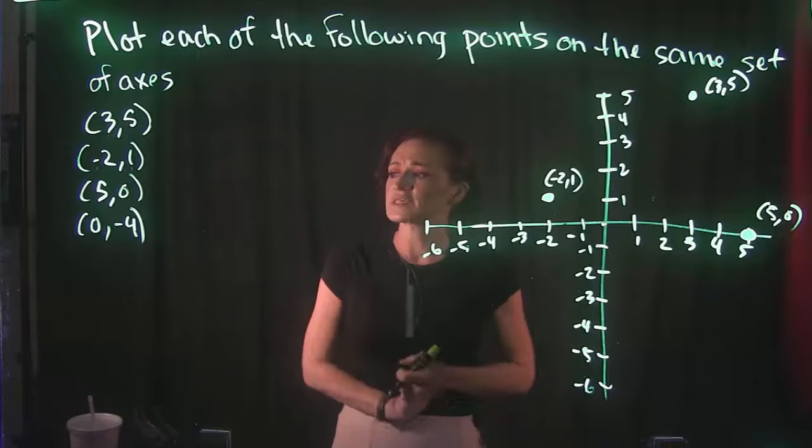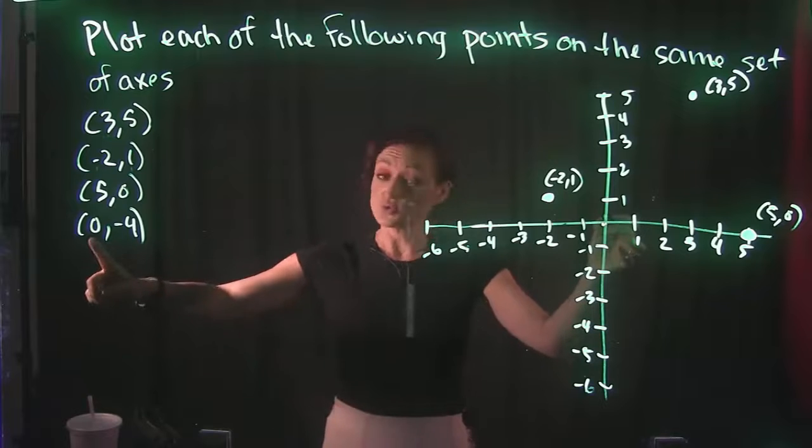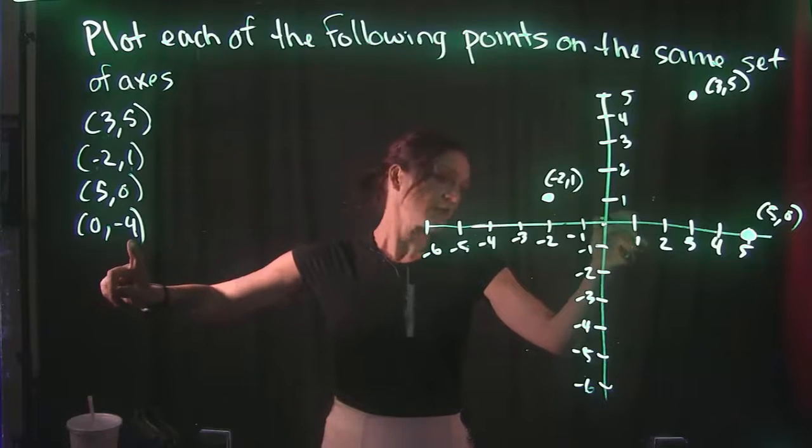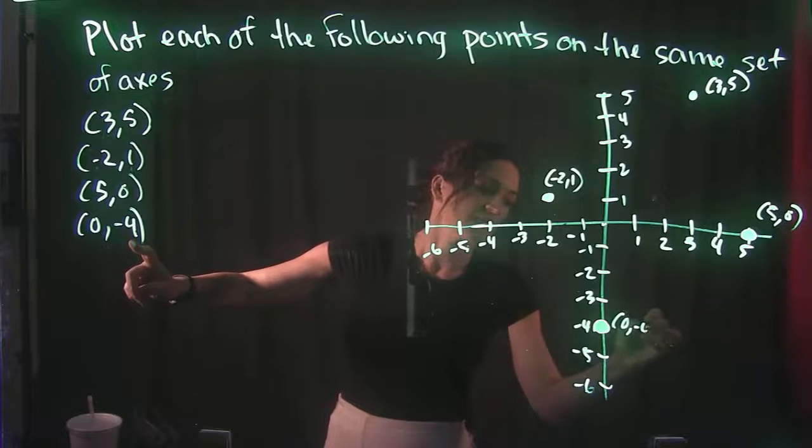And then our last point is 0, negative 4. So again, back at the origin. 0 means we do not move left or right, but that negative 4 means we do go straight down 4 and plot our point there.